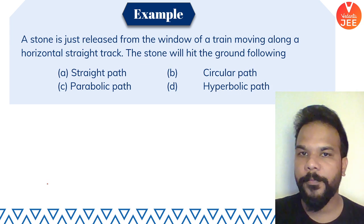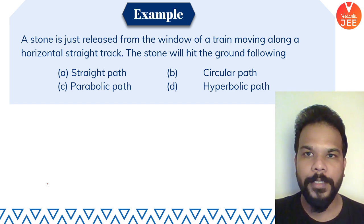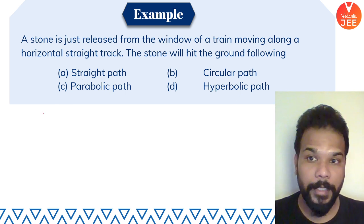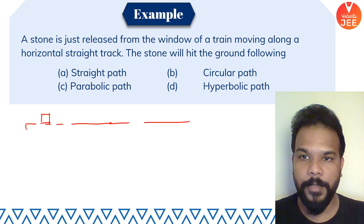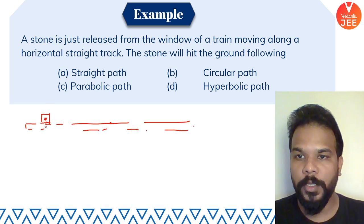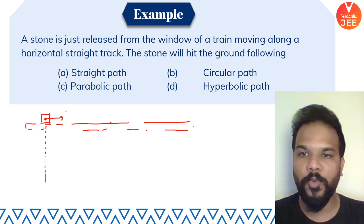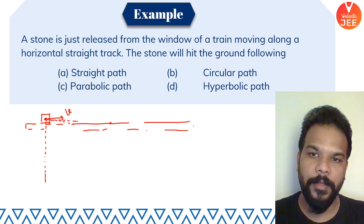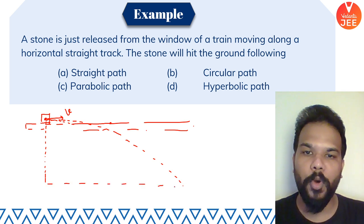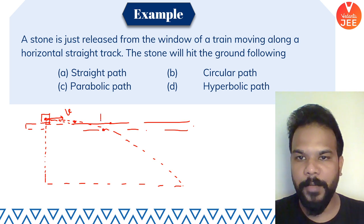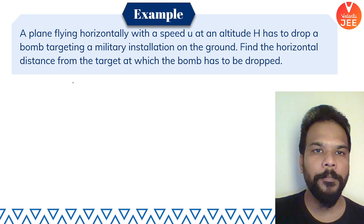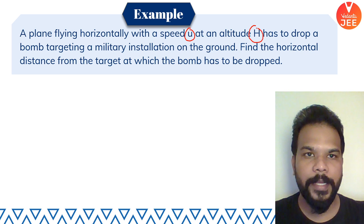First question: a stone released from the window of a train moving along a horizontal track — what path does it follow? Options are straight, circular, parabolic, or hyperbolic. When the train moves with velocity v, the dropped stone also has the same horizontal velocity plus a vertical velocity it gains, so it follows a parabolic path — just like the bomb dropped from the aeroplane.